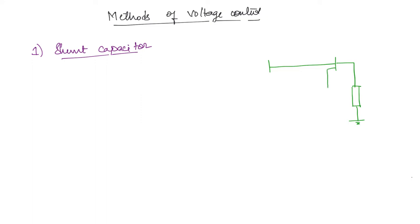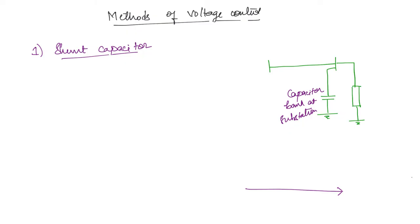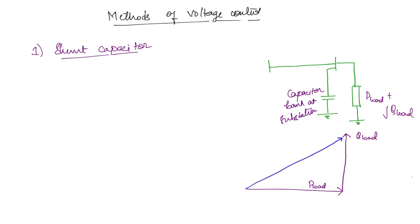Here we are connecting a capacitor bank at the substation. We can understand this from the power triangle. This is the active power taken by the load — let us say this is P load. So the complex power will be P load plus j Q load. The active power will not change in the presence of the capacitor bank. This is the complex power for the uncompensated system.